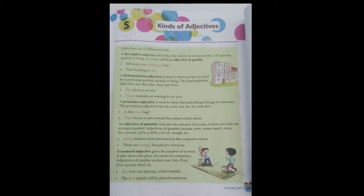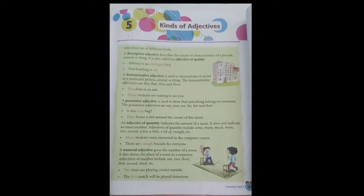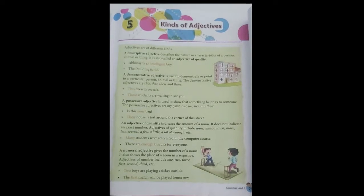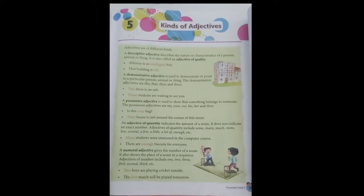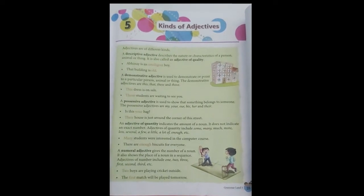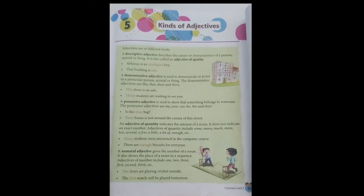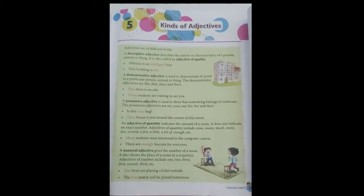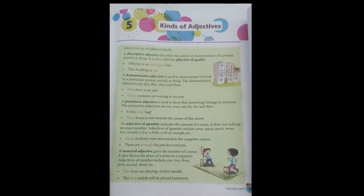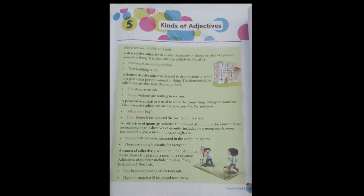First of all, let's have a clear idea about what is an adjective. An adjective is a word which describes or modifies nouns and pronouns in a sentence. It normally indicates quality, size, shape, duration, feelings and many more of a noun or a pronoun. In other words, we can say an adjective is a describing word. Let's come back to our topic: kinds of adjectives.